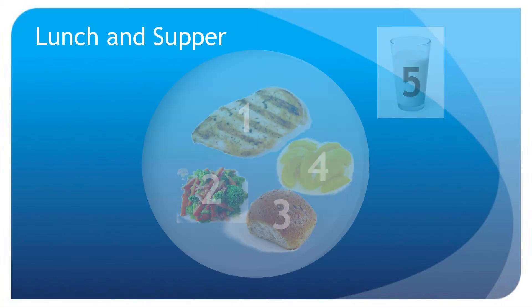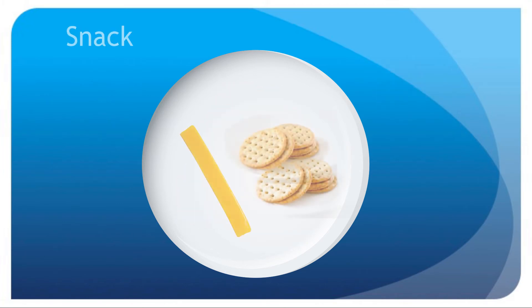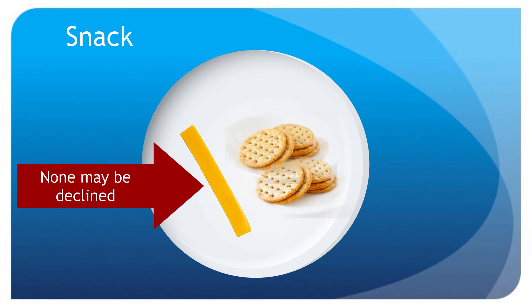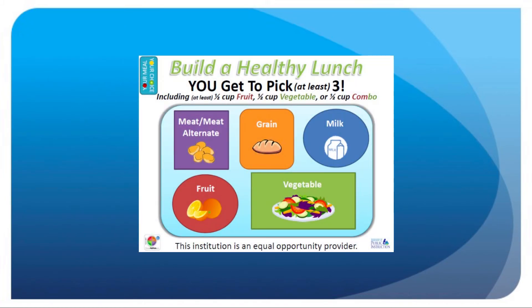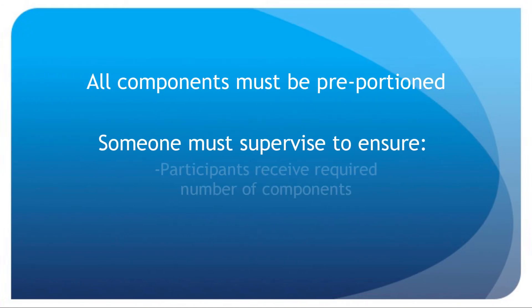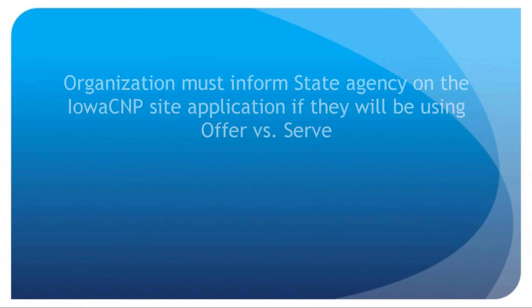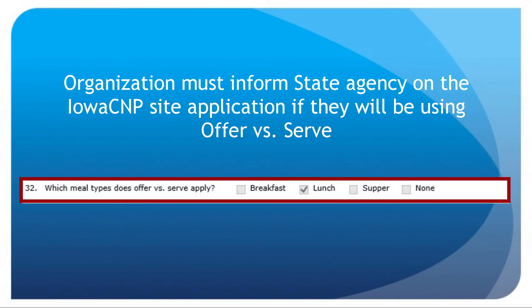At lunch and supper, five components must be offered and two components may be declined, so the child must receive three components. All components must be served at snack and none may be declined. Instructions or signs must be available to let supervisors and participants know what choices make up a reimbursable meal. All components must be pre-portioned and someone must supervise to ensure participants receive the required number of components and that meal participation is correctly recorded. The organization must inform the state agency on the Iowa CNP site application if they will be using offer versus serve.